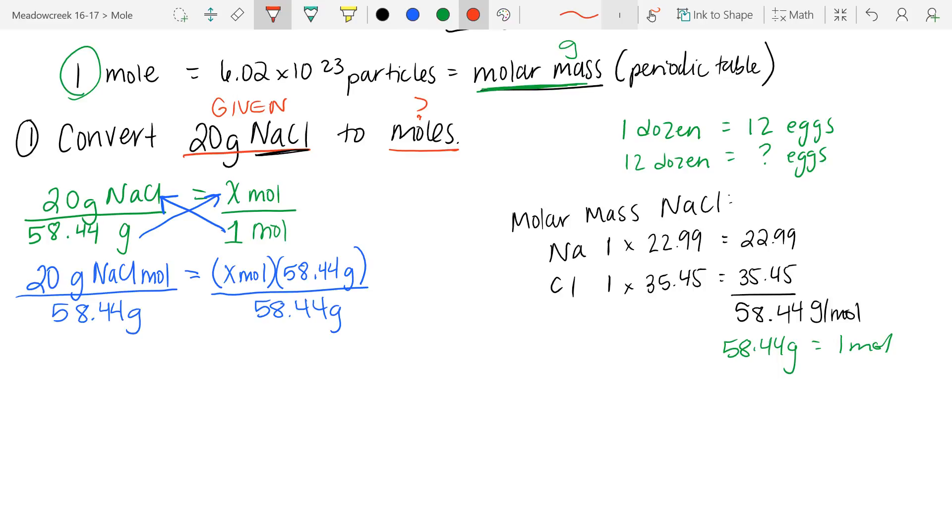So when I look at this, my 58.44 grams on both sides cancels out, and then my grams cancels out on my left side. So when I do the math here, I'm going to have x number of moles is going to be equal to, my units are moles of NaCl. And when I do my math, I have 20 divided by 58.44, and I get 0.342 moles.